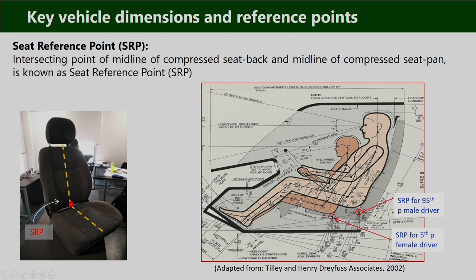When a 5th percentile female mannequin or a 95th percentile male mannequin is positioned with their leg on the accelerator touching the AHP and they adjust the seat forward or backward, the SRP position varies accordingly. The 5th percentile female moves the seat forward while the 95th percentile male moves it backward. Thus the SRP position for the 5th percentile female and for the 95th percentile male are at different locations relative to the vehicle, varying as per seat adjustment.